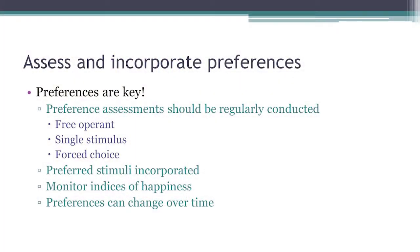We should monitor for indices of happiness — this can be something that you measure. Maybe we should be measuring how often our kids are smiling and laughing and talking about being happy, in addition to how often they're engaging in aggression or self-injury. And preferences change over time. We know this is true for all of us, so we need to be assessing them regularly in our kids.